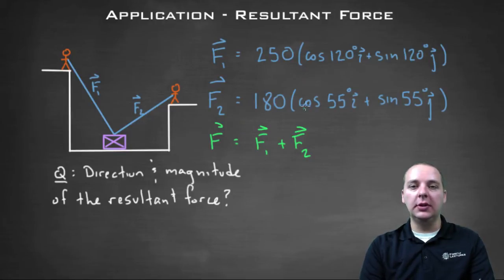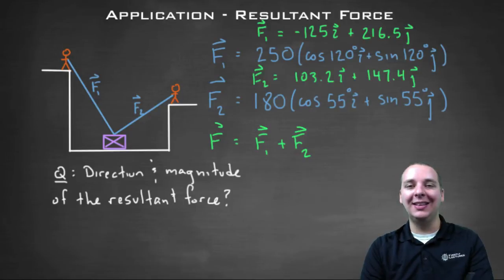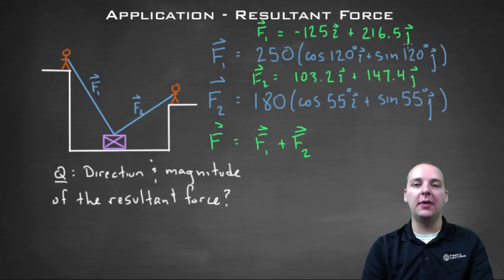Now what you should do is get out your calculator and put it in degree mode and calculate what force one and force two actually are. To save us a little bit of time in this video, I went ahead and did this already. Force one is going to be negative 125 I plus 216.5 J rounded, and force two is 103.2 I plus 147.4 J.